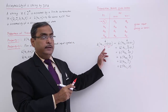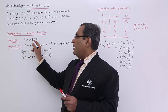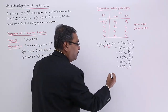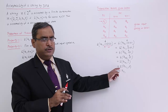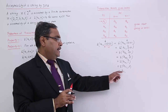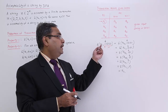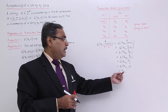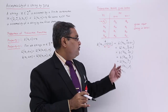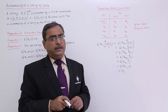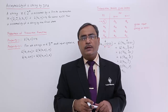Here we have applied property 2 throughout, and now we apply property 1: delta(q1, kappa) equals q1. So our terminating state is q1. Since q1 is the final state — a member of f — the string has been accepted. In this way, the acceptability of a certain input string by a DFA can be determined. Please do some practice on such problems, and thanks for watching this video.